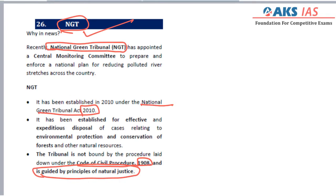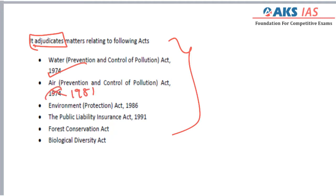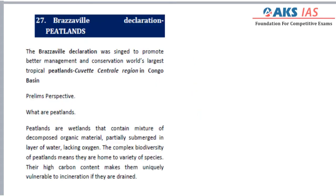The laws that the National Green Tribunal adjudicates include the Water Prevention and Control of Pollution Act 1974, Air Prevention and Control of Pollution Act 1981, Environment Protection Act 1986, Public Liability Incidents Act 1991, Forest Conservation Act, Biological Diversity Act 2002, and others.